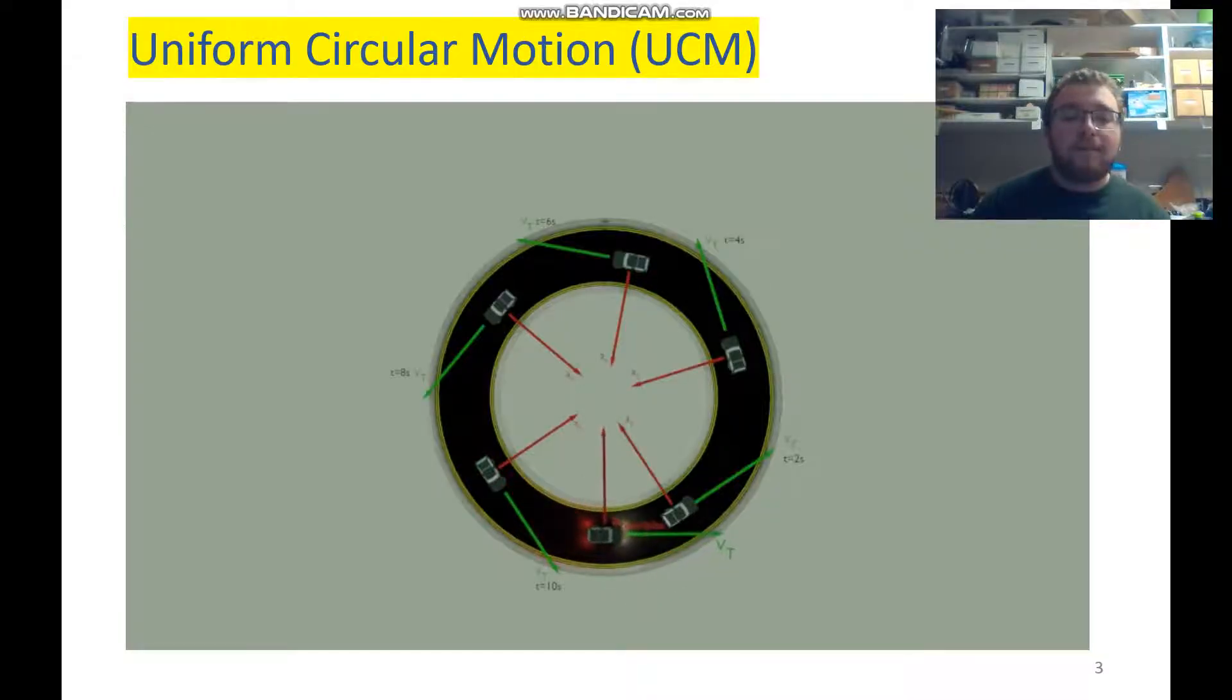So our velocity is called tangent to the circle. If we draw a line, it only touches the circle once. And if you're sitting in the car, you're just looking straight ahead, you would see going out of the circle, you would see that tangent line.